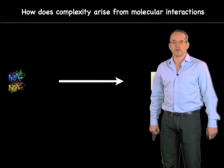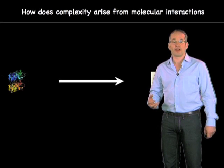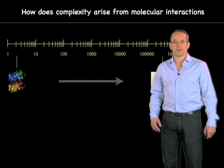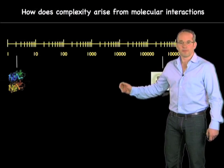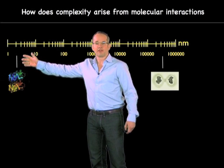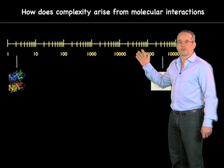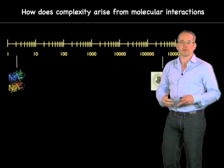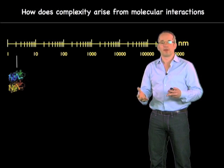One of the key questions in biology that we're all interested in is: how does complexity arise from molecular interactions? The things we're interested in, such as cells, are often five or six orders of magnitude bigger than the molecules that make them up. So if you have a molecule over here on this scale, the cells are 10 to the 5, 10 to the 6 orders of magnitude bigger than the molecules they make up. What are the rules by which these molecules can interact to create these very complex structures, which are so much bigger than they are themselves?